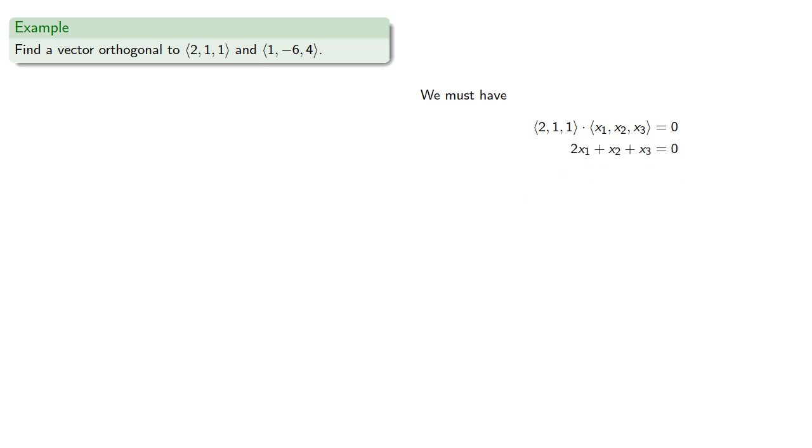And also the dot product with (1, -6, 4) will be 0, and that gives us the equation. And so we have our system of linear equations.